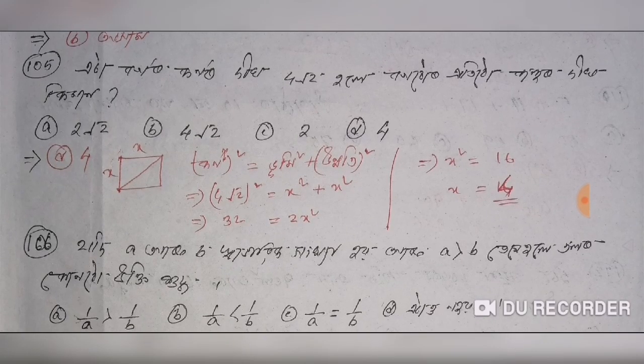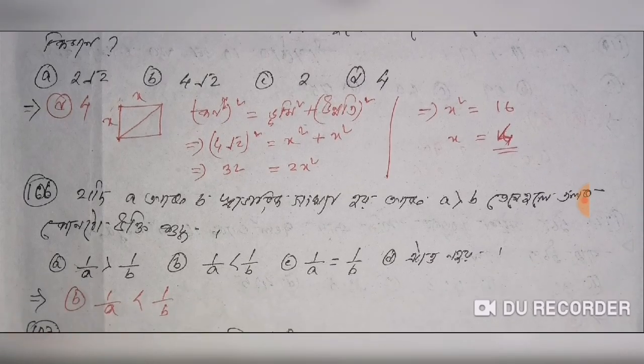If we have x squared plus x squared is 2x squared, then x squared is 16, and x squared is 16, and x squared is 4. So option D is very good.